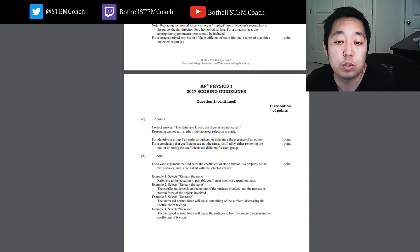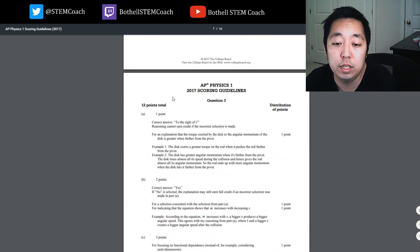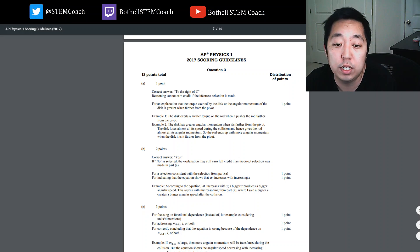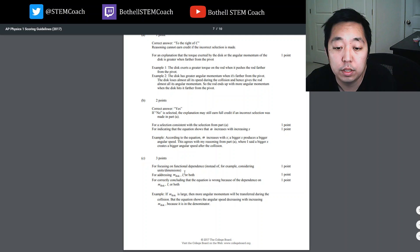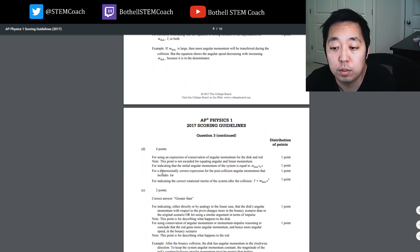Let's look at some of the scoring guidelines for question three. Question one, to the right of C, and an explanation that the torque on the disc or angular momentum of the disc is greater. Number two, yes, omega increases with bigger x. That's what we said. Correctly included or wrong is because of the dependence on mdisc, I, or both. So mdisc and I were the two parameters that were incorrect.